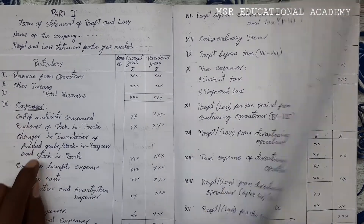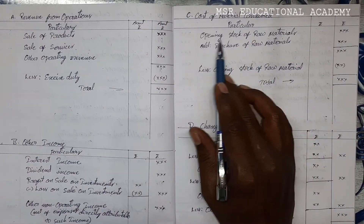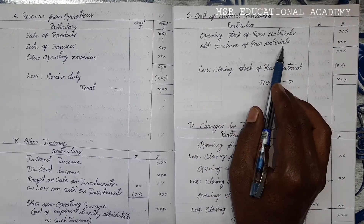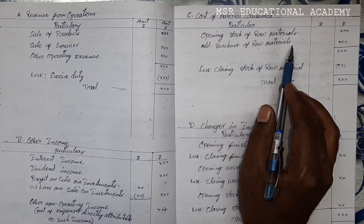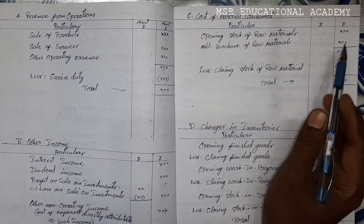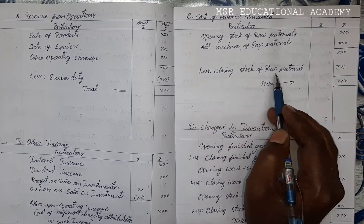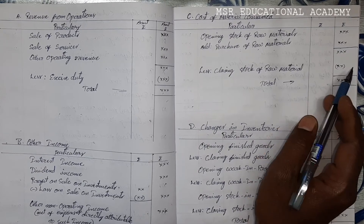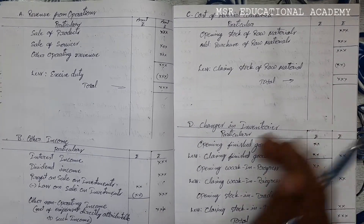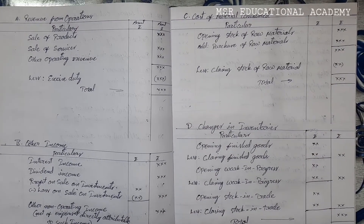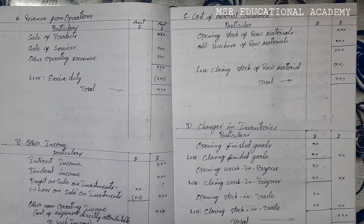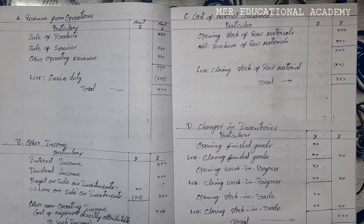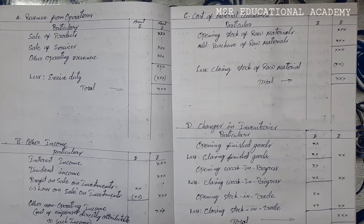Under cost of material consumed: first, opening stock of raw materials, add purchase of raw material — if there are any returns, simply deduct from the purchase of raw materials. After adding opening stock and purchase of raw materials, then less closing stock of raw materials. After deducting closing stock of raw materials, the total amount is called cost of material consumed. This is for raw materials only — please remember it is raw material only. If any material is directly given, you can also write it under cost of material consumed.